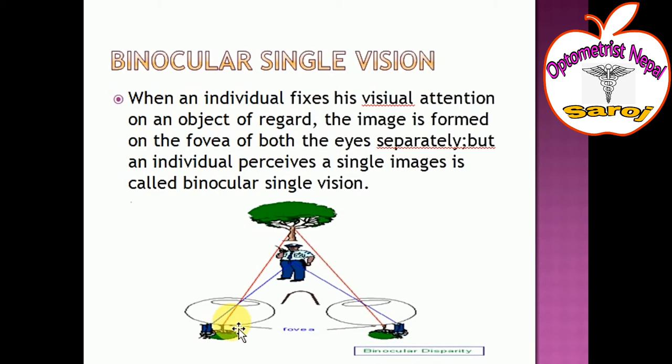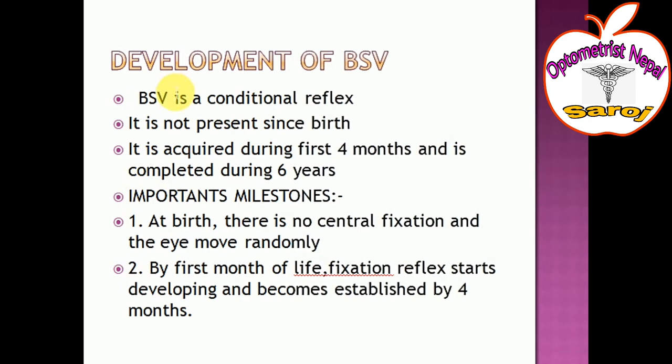Looking at this picture: this is the right eye and this is the left eye. Both eyes are looking forward at a policeman and a tree. These two images are focused on the fovea of the right eye and also the fovea of the left eye, and this image is perceived as a single image by the brain — this is called binocular single vision.